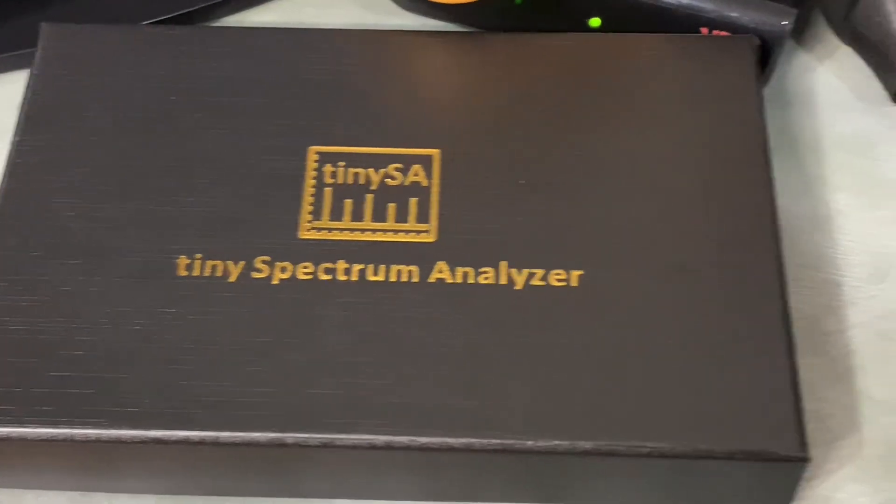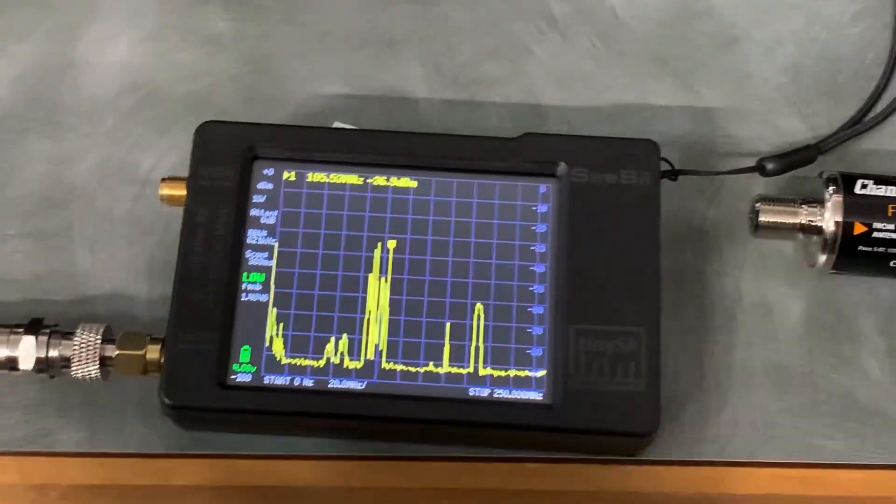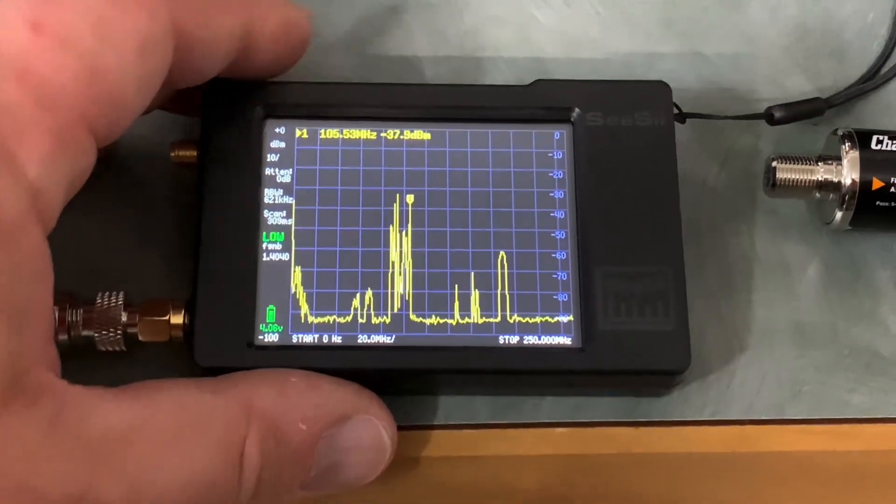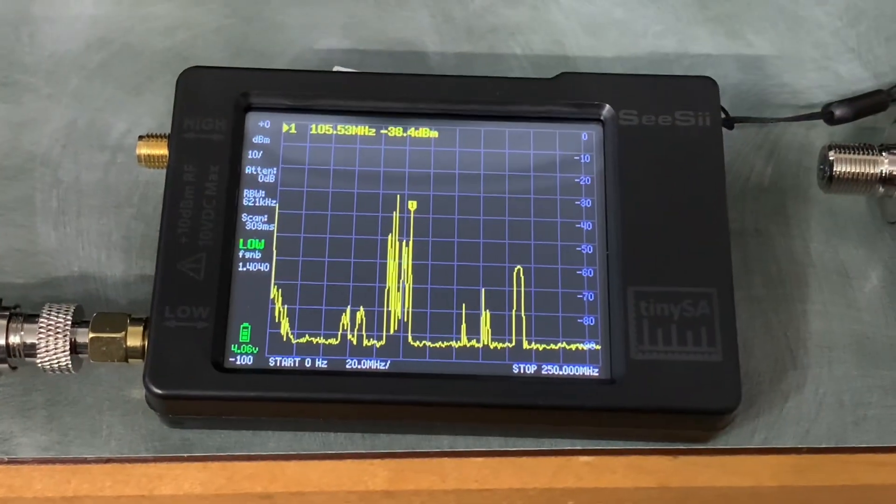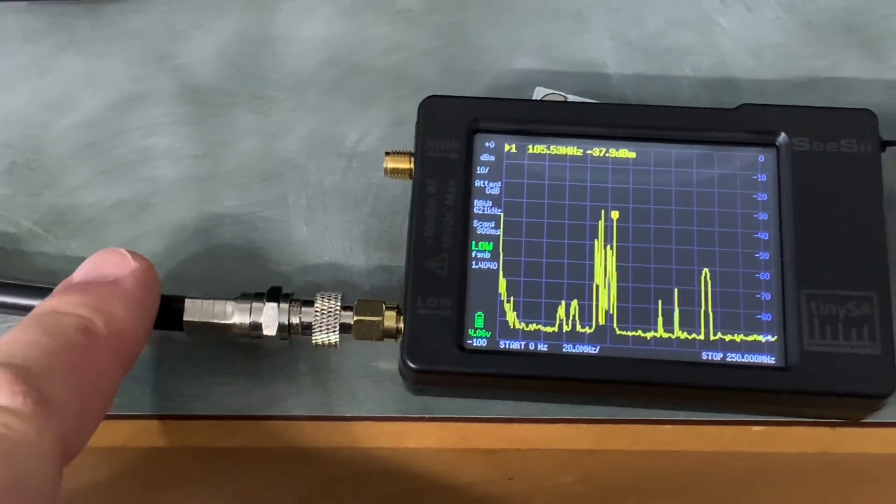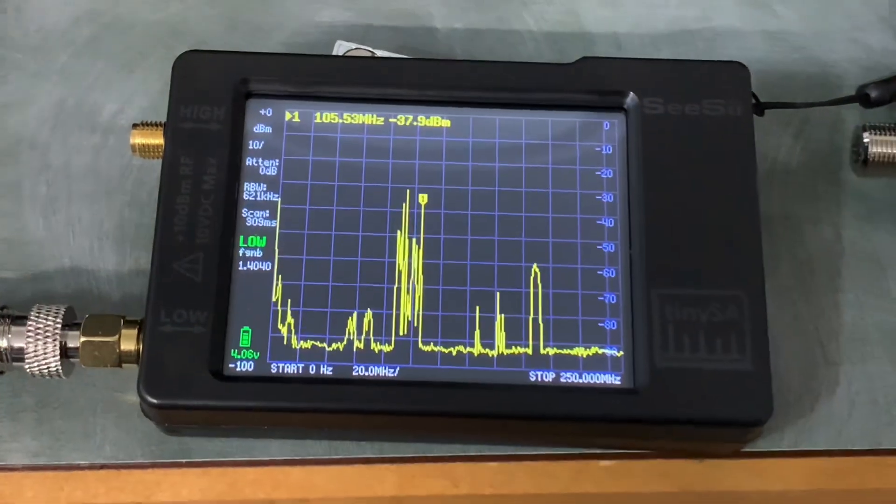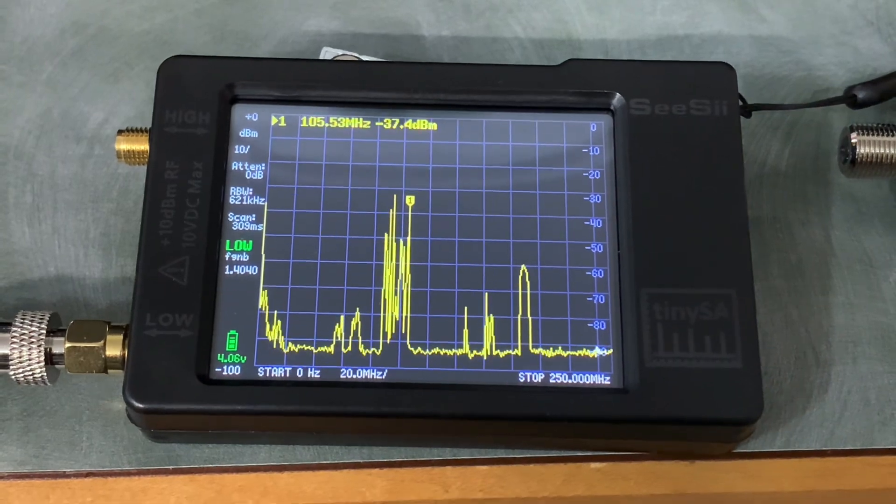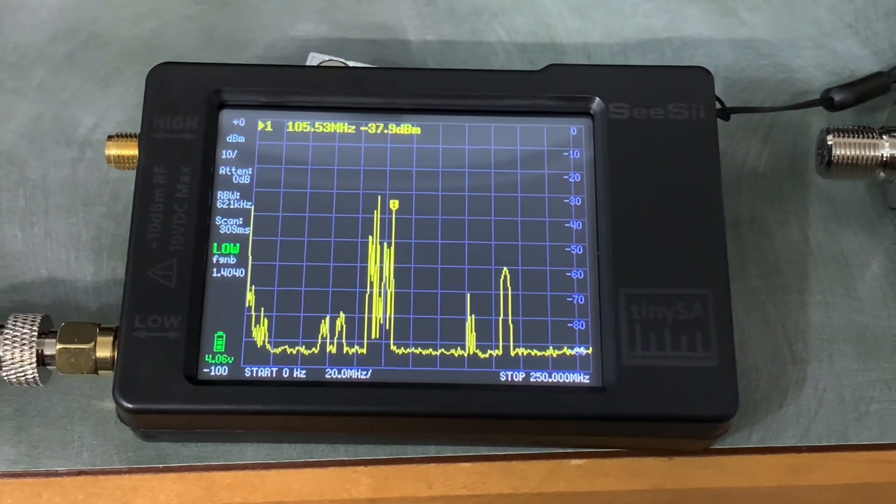I bought one of these tinySAs, a mini spectrum analyzer that fits in the hand. They're available at a very reasonable price on Amazon. I have it connected to an outdoor TV antenna here, and you're looking at part of the RF spectrum in my area.